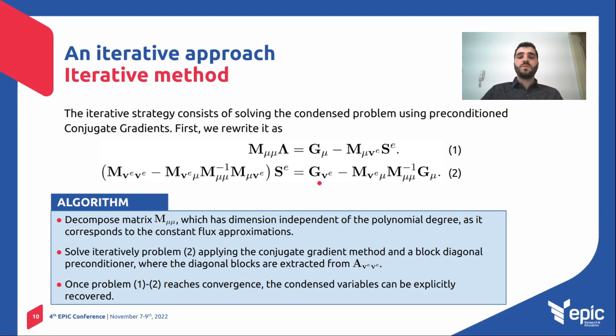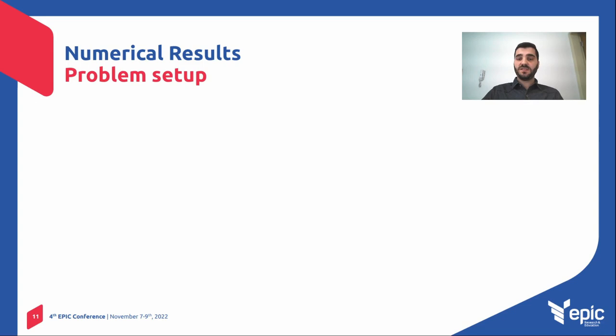Once it is converged, we can simply recover the other variables of our problem by backward substitution. So this is our algorithm.